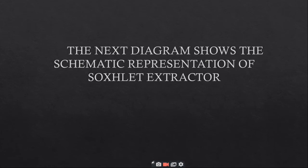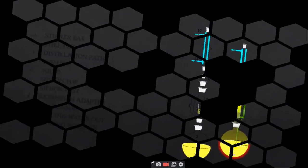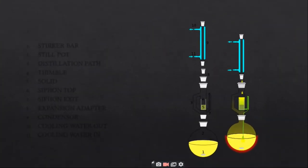In the next diagram you will see the schematic representation of Soxhlet extractor. This is the diagram of assembled Soxhlet extractor. There are numbering from 1 to 11 which shows some main points.